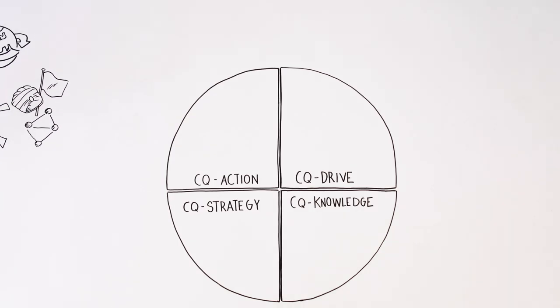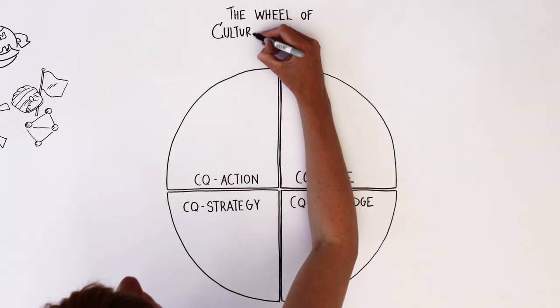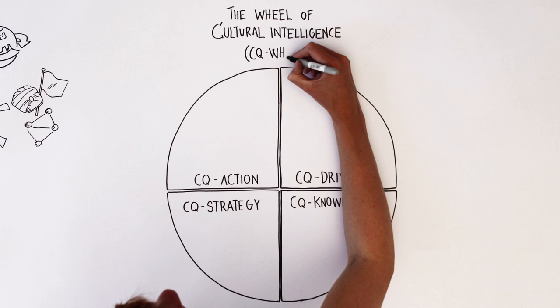To do that, we need to break down cultural intelligence into four focus areas. We call that the wheel of cultural intelligence, or just the CQ wheel.